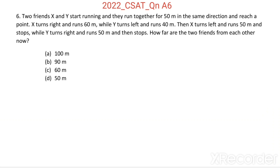Question number six: two friends X and Y start running and they run together for 50 meters in the same direction and reach a point. X turns right and runs 60 meters while Y turns left and runs 40 meters. They start from the same point — take it as the origin. Then they run in the same direction for 50 meters and reach a point, take that point as P.